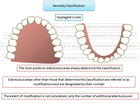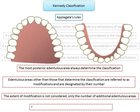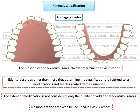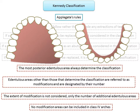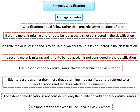Rule 7: the extent of the modification is not considered — only the number of additional edentulous areas. The number of teeth missing in the modification spaces is not considered, only the number of additional edentulous spaces. Rule 8: there can be no modification areas in Class 4 because any additional edentulous space will be posterior to it and will itself determine the classification.